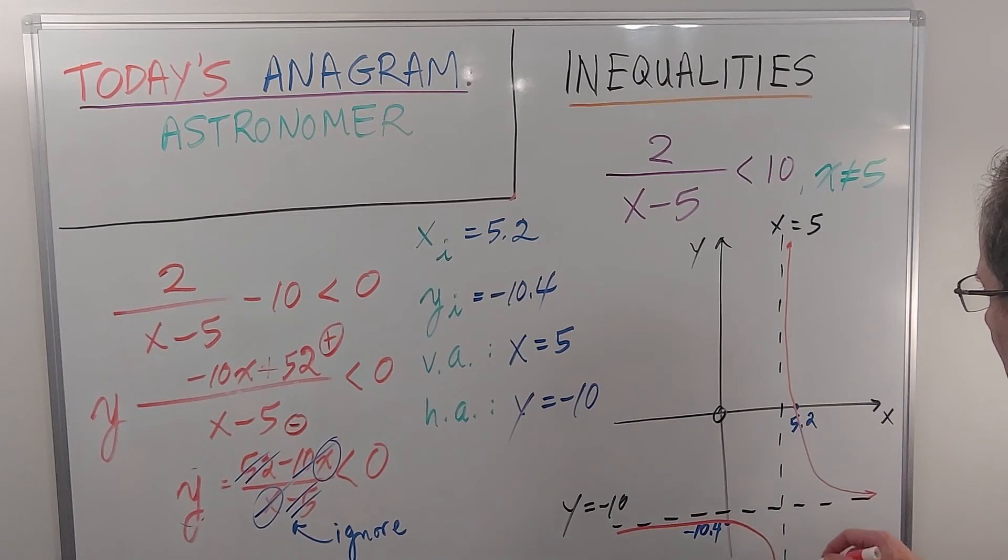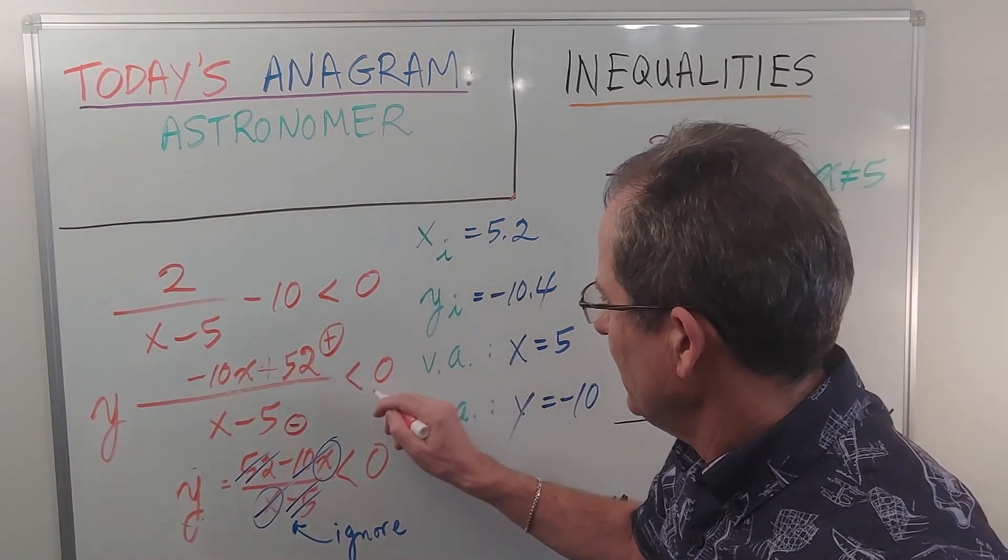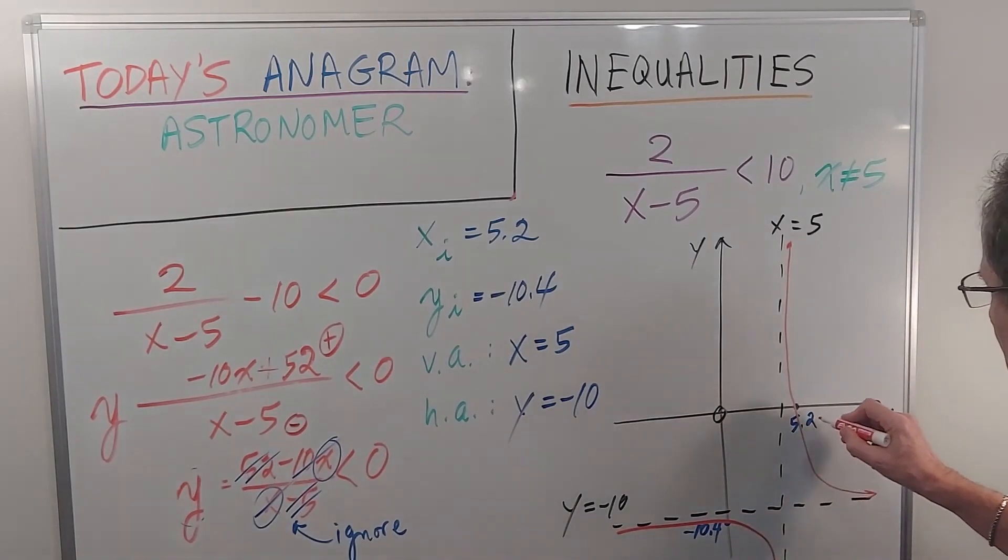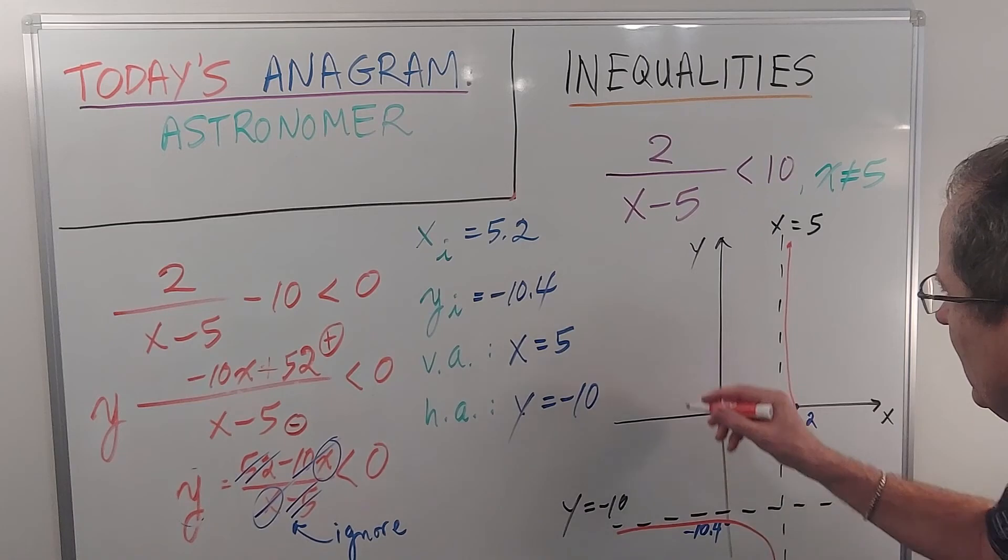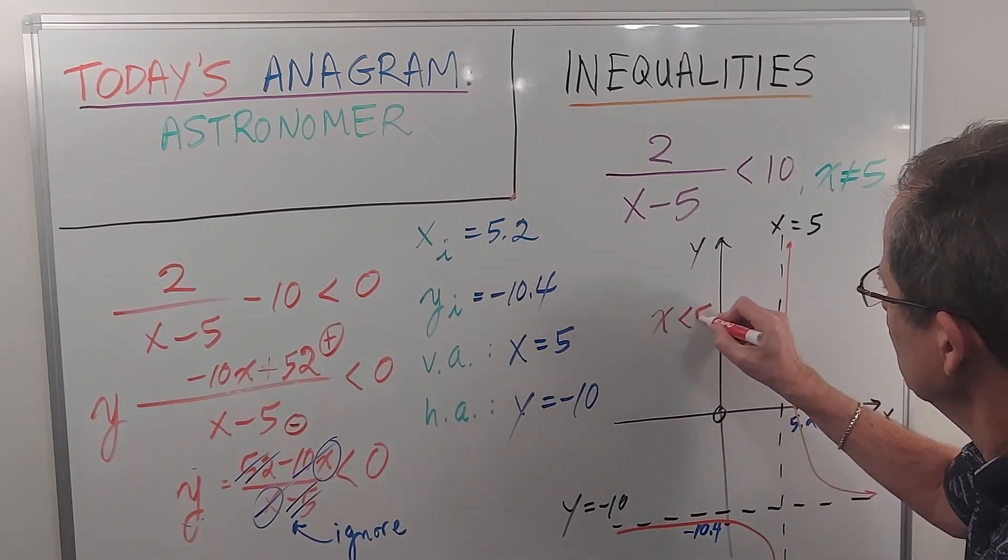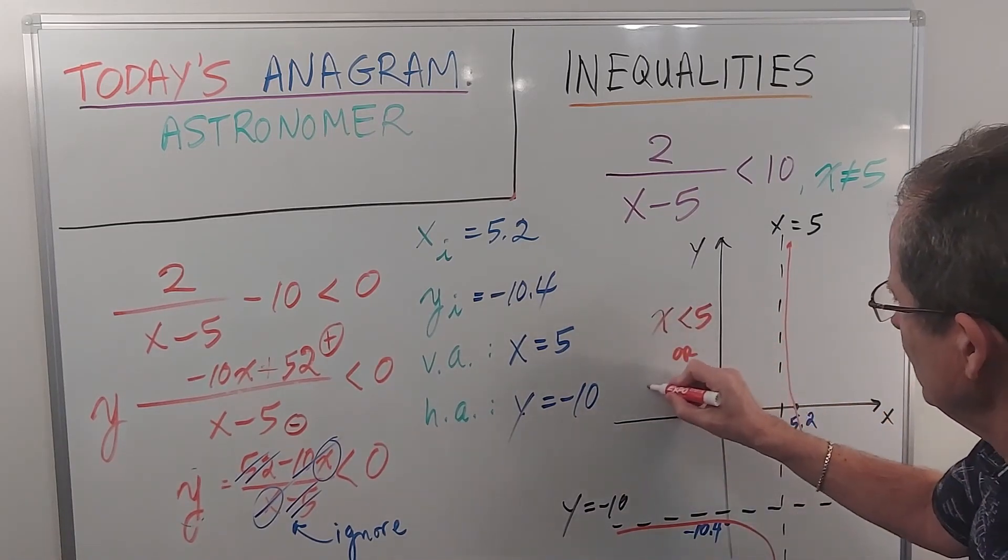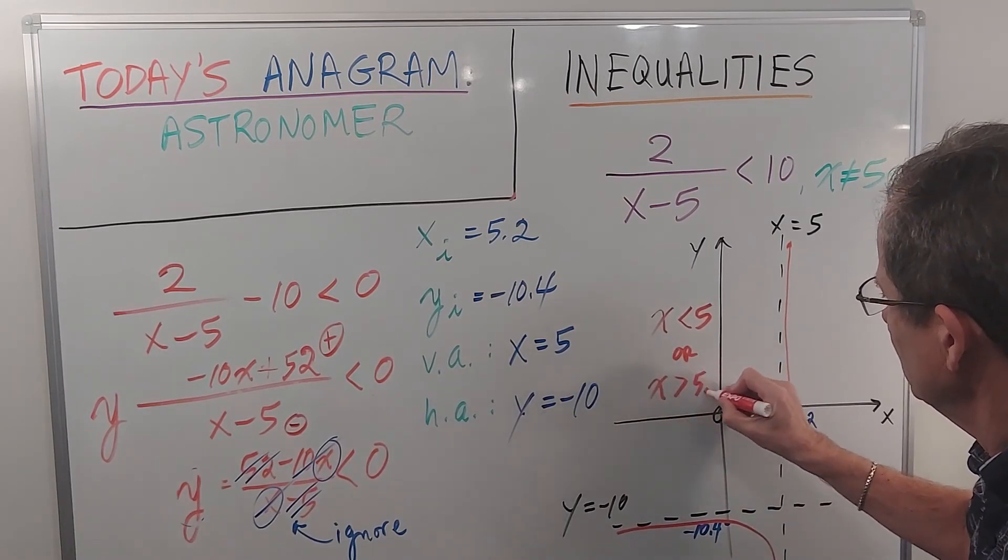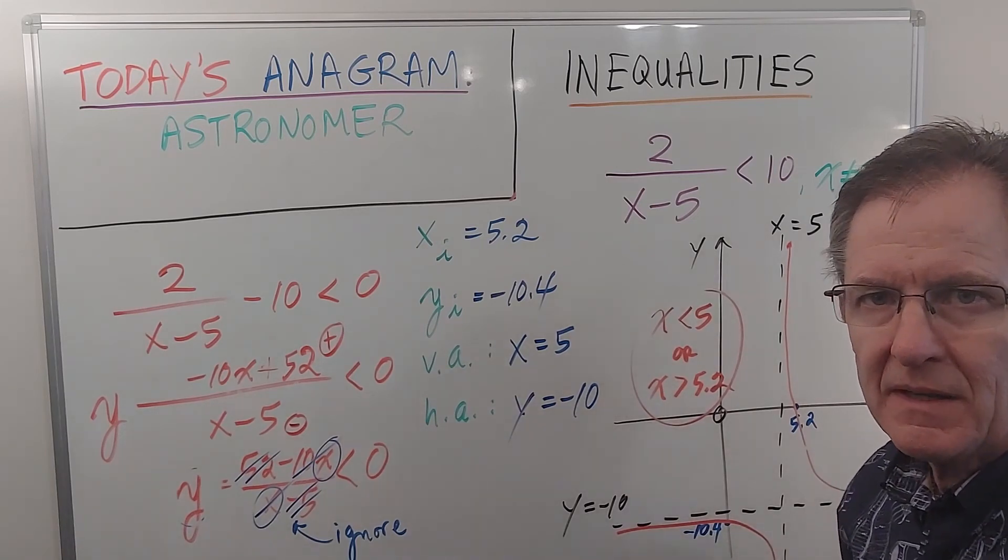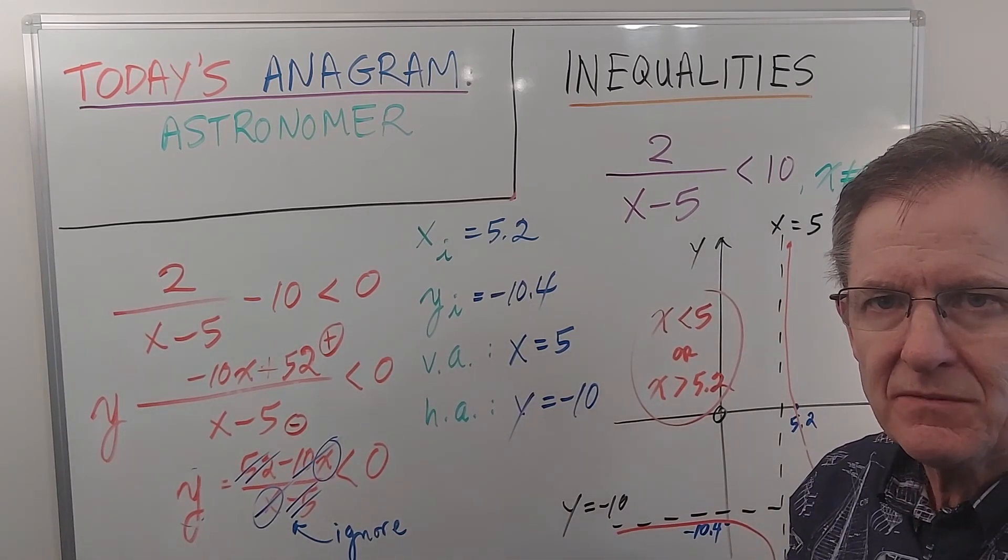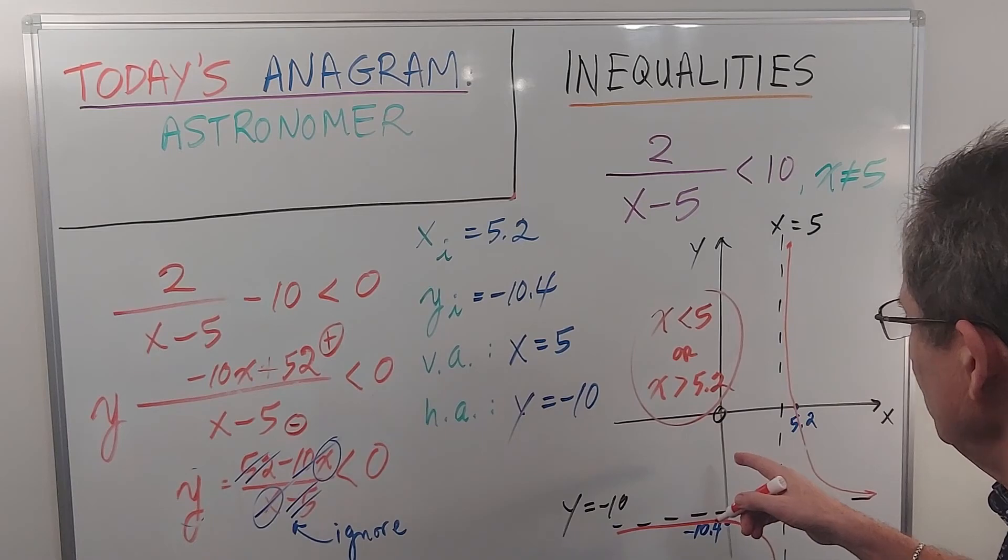You might not be able to see that too well, but it goes down to negative infinity. So where is the graph negative? Because we want to know where the function is negative. That's below the x-axis. Well, it's x less than 5 or x bigger than 5.2. That's exactly what we got in the last video by considering the two cases where x was less than 5 or bigger than 5.